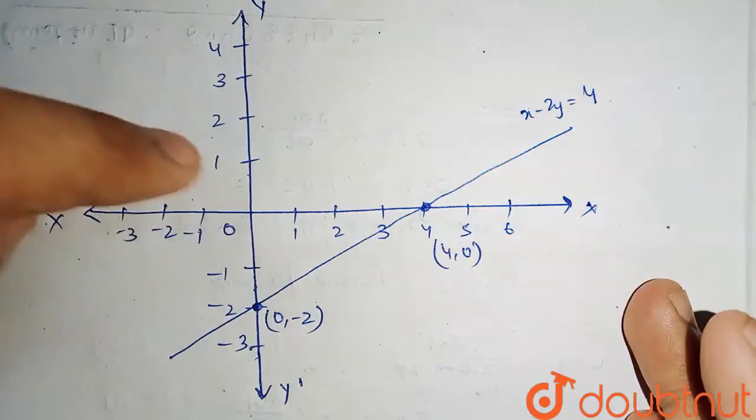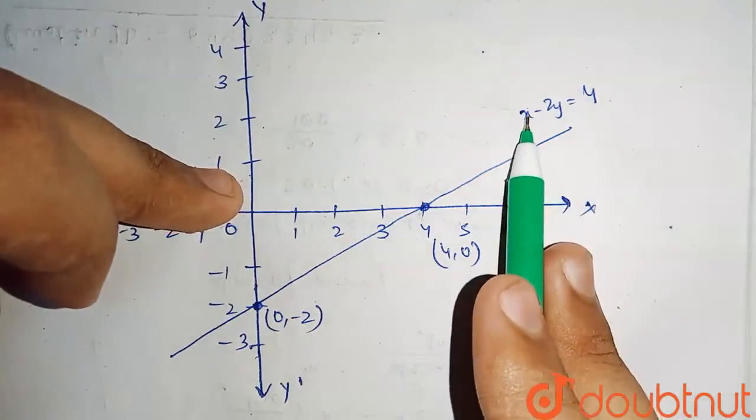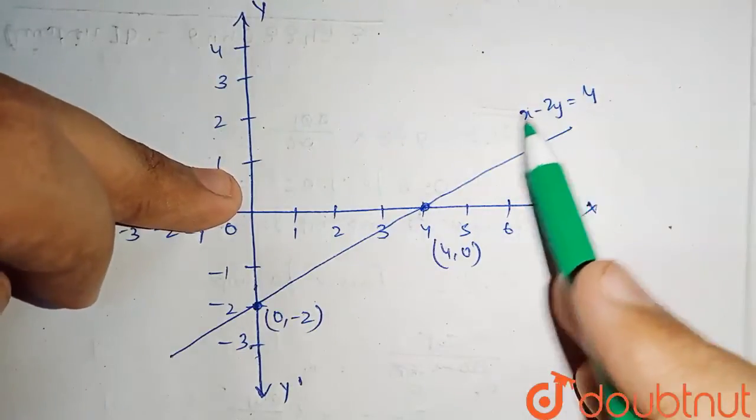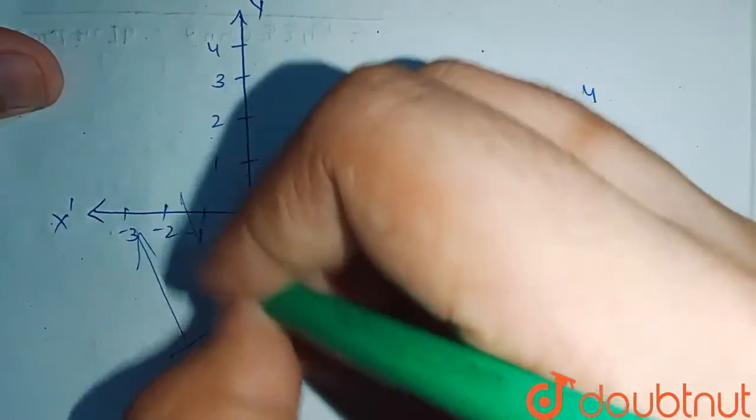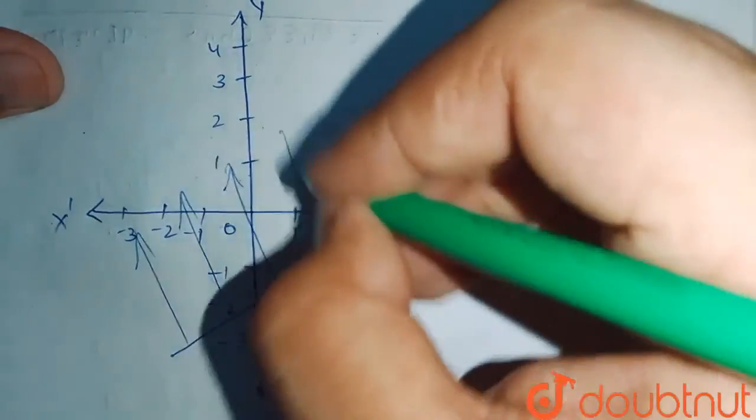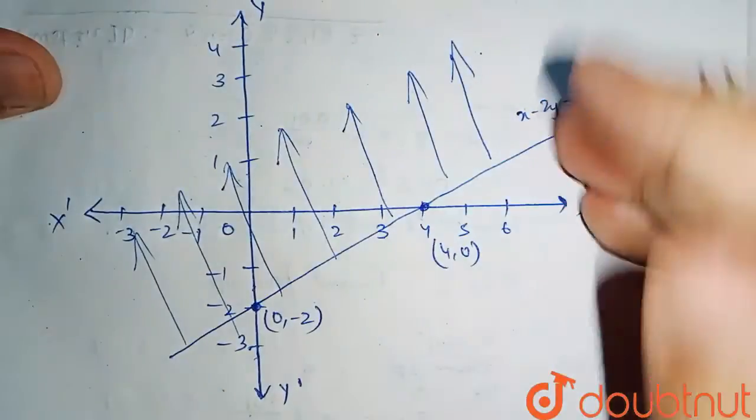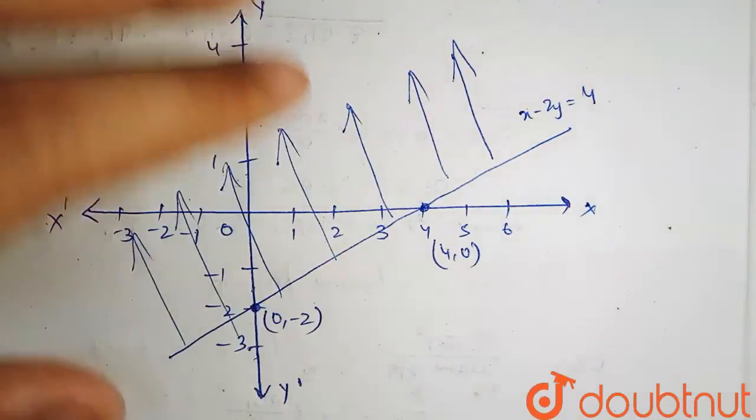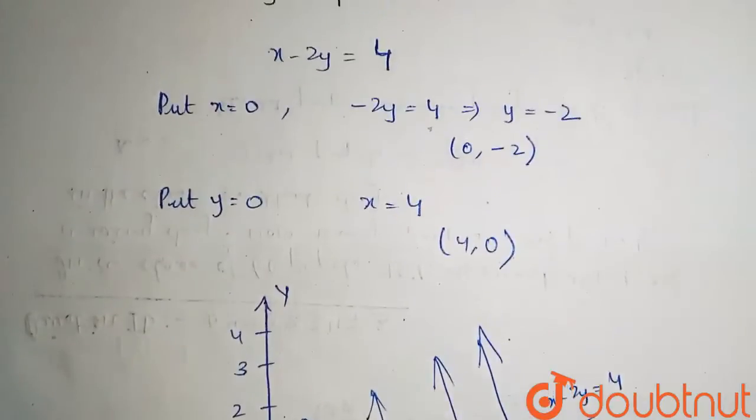Suppose we take an example of 0, 1. So on putting this equation 0, 1, we get the value minus 2. And minus 2 is less than 4. So all the points belonging to these areas would be the answer. So above this line, all the values x-2y less than equals to 4. This is our answer. Thank you.